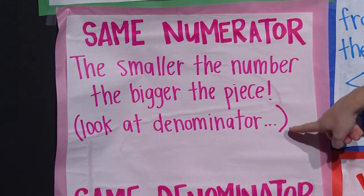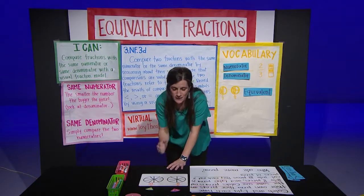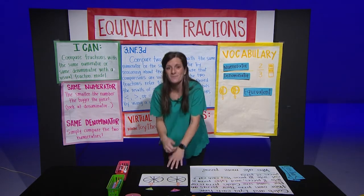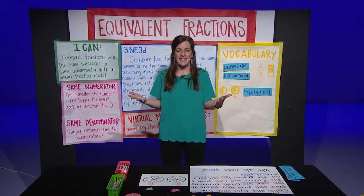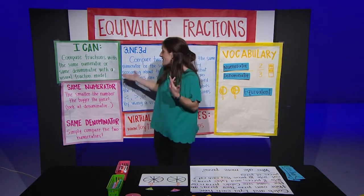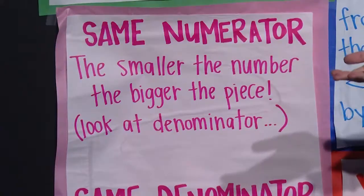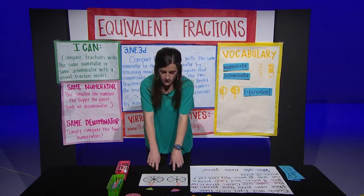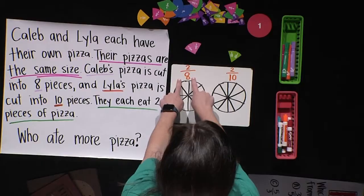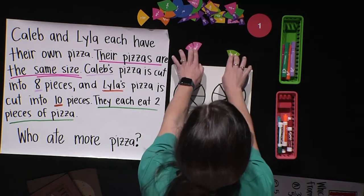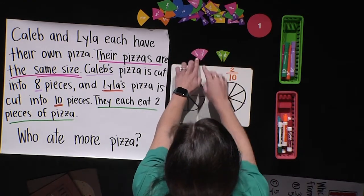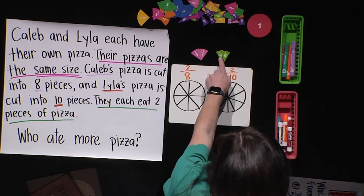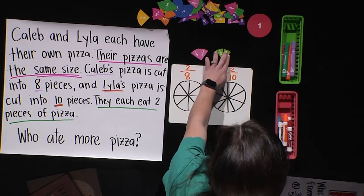We will look at the denominator and say: the smaller the number, the bigger the piece; the bigger the number, the smaller the piece. My kids love saying that, and it helps them remember — if I have the same numerator, just do the chant. And what that means in our pizza problem is that if I have a smaller denominator, my pieces are actually bigger. When I have a bigger number, my pieces end up being smaller.